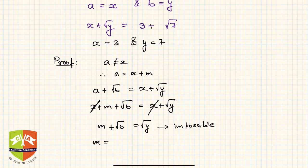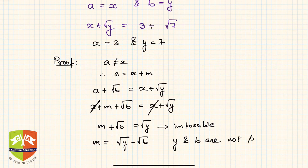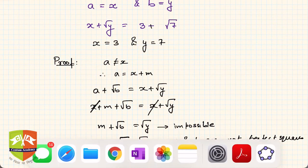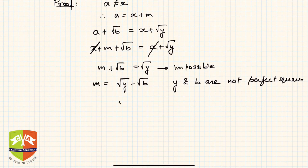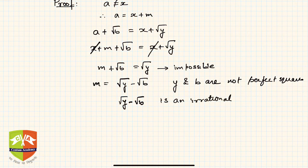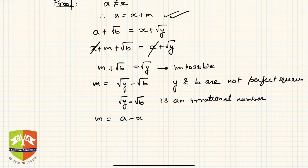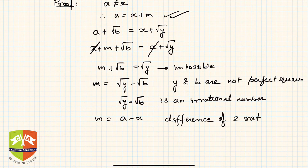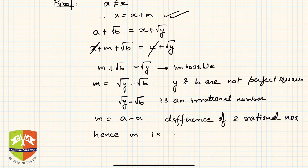Another way to say it: m equals root y minus root b. Now y and b are not perfect squares, so root y minus root b is an irrational number. And m was a minus x, which is the difference of two rational numbers, hence m is a rational number.